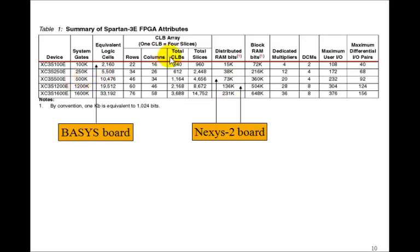The Spartan IIIe also contains block RAM bits — we'll talk about block RAM and how we use it for video graphics in later lessons. The 500K version contains 360K of block RAM bits, and the 1200K contains 504K. We'll see you next time.